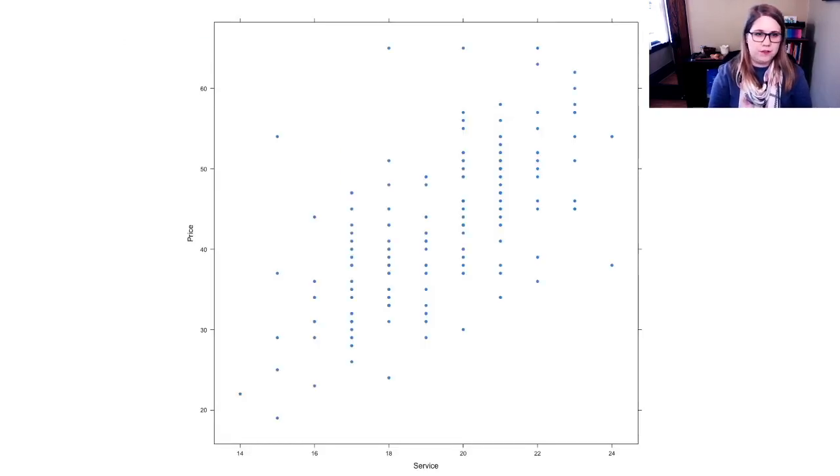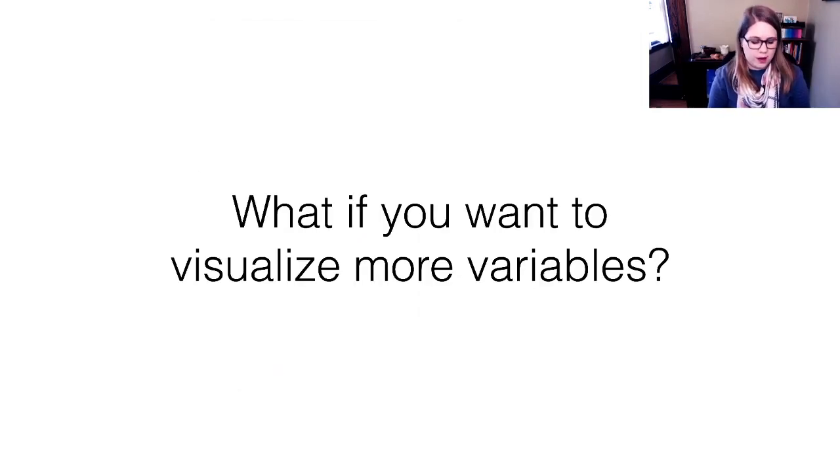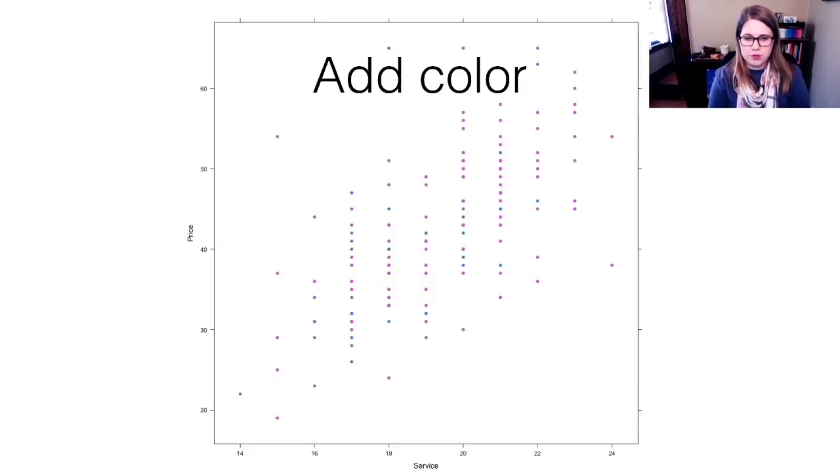So if you just have two quantitative variables, of course, you could make a scatter plot. And then if you had more variables, one thing you could do is you could add color to add a third variable that was a categorical variable. You could also add shape as a way to map some variable into the visual space. But you run out of visual attributes in two dimensions pretty quickly.